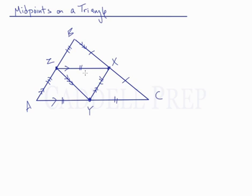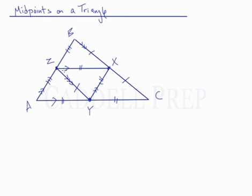We also have parallelogram BXYZ. Because opposite sides are parallel, this must be a parallelogram, and opposite sides are congruent, so BX and ZY are congruent. We also have parallelogram ZXCY, where opposite sides are parallel and congruent, so CY is congruent to ZX.